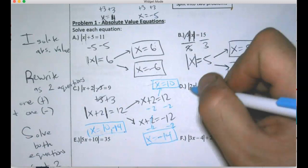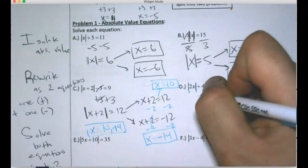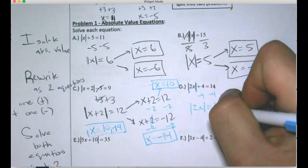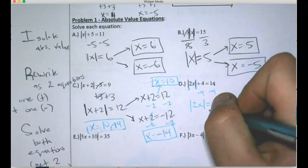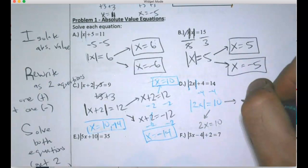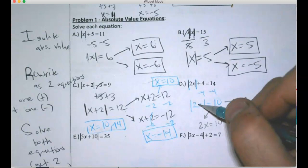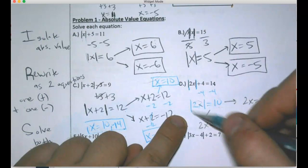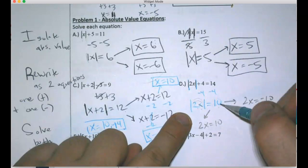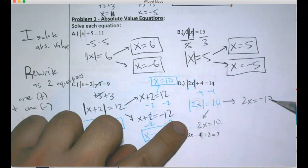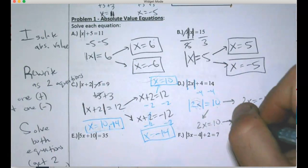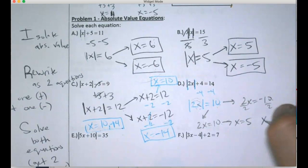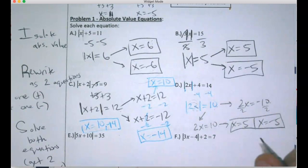For the next one, isolate the absolute value by subtracting 4 — 14 minus 4 is 10. Now that the absolute value is isolated, remember to write two equations: 2x equals 10 and 2x equals negative 10. Two x is 10 spaces from zero, so it equals positive or negative 10. Divide by 2 on both: 10 divided by 2 gives x equals 5, and negative 10 divided by 2 gives x equals negative 5. Those are the two answers.